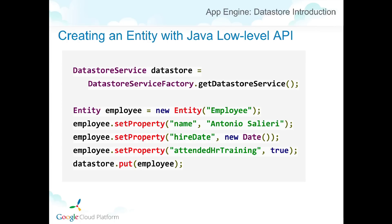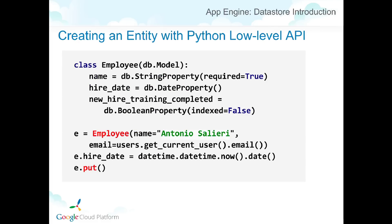Here's a practical example of how to create an entity using the Java low-level API. First, create an entity Java object, then set properties, and finally put this Java object into the Datastore using the put function, which communicates with the Datastore and saves the data. The same pattern is used in Python — create a Python object, set properties either in the constructor or afterwards, and lastly put saves the data into the Datastore.